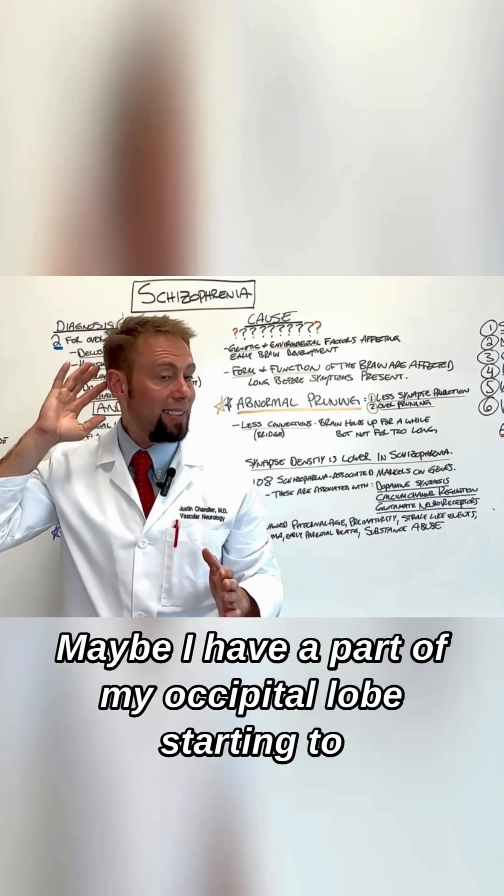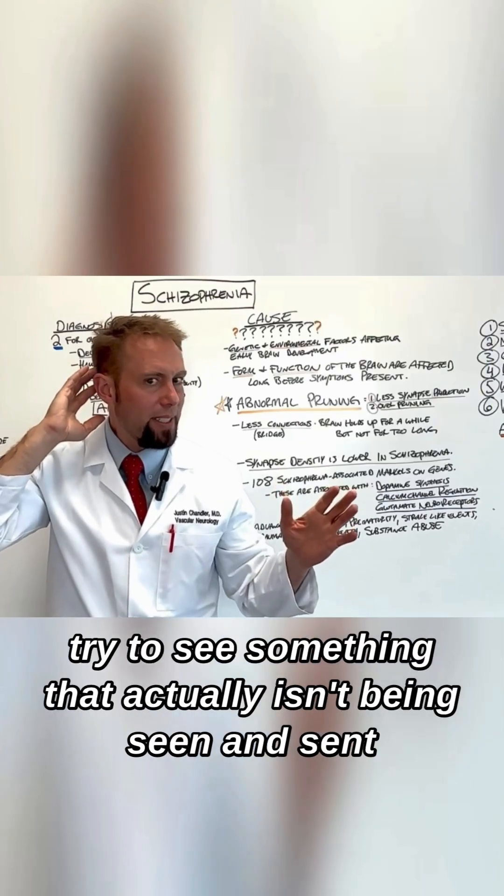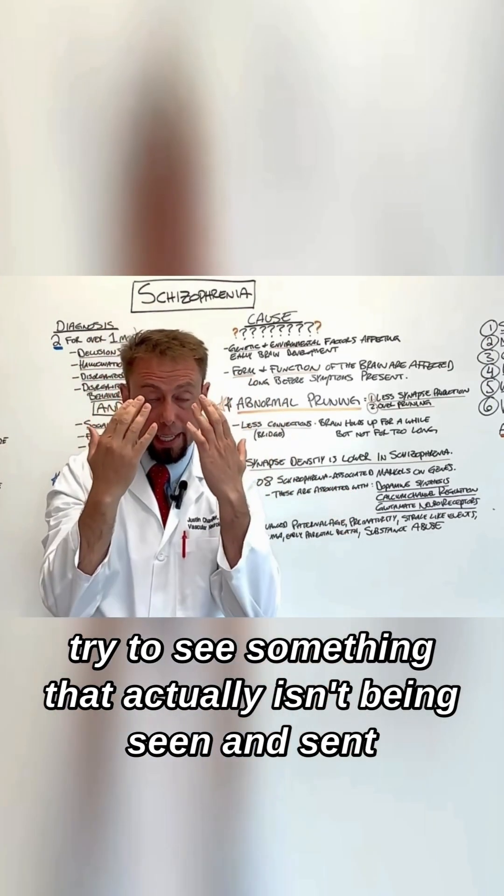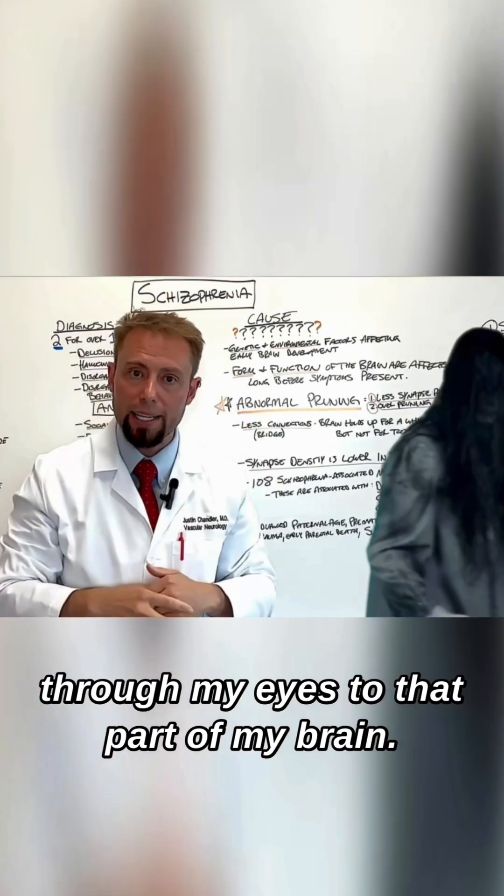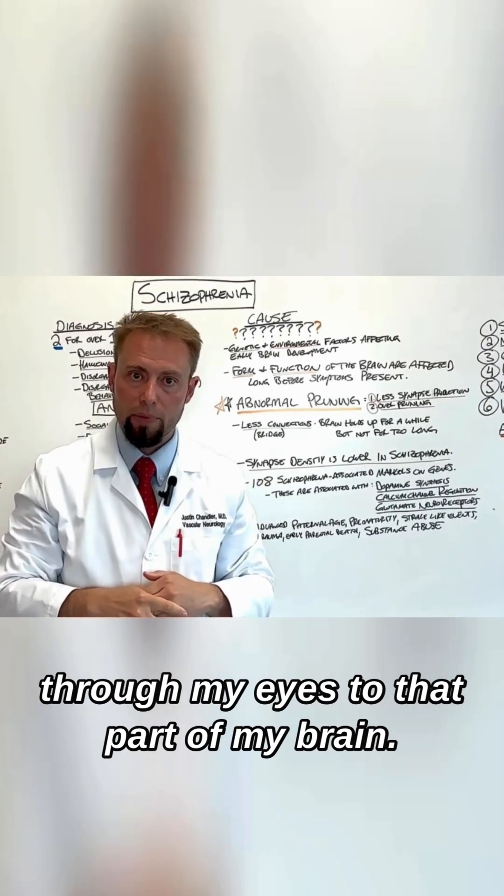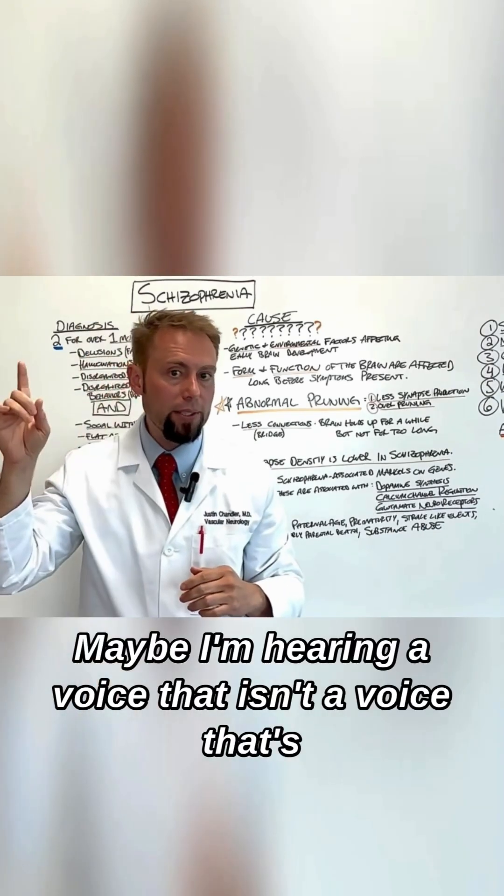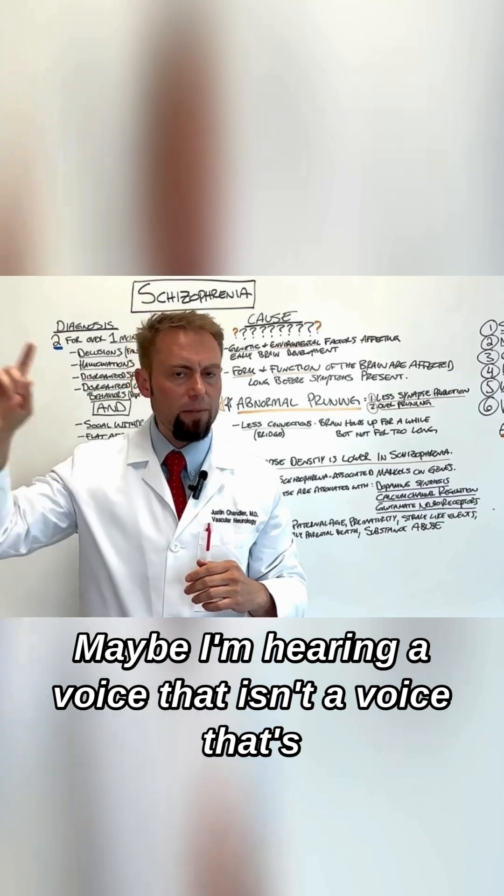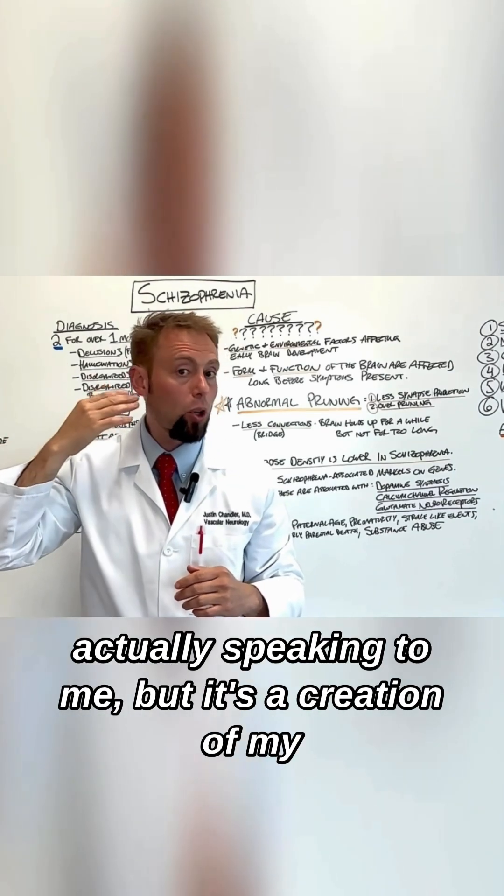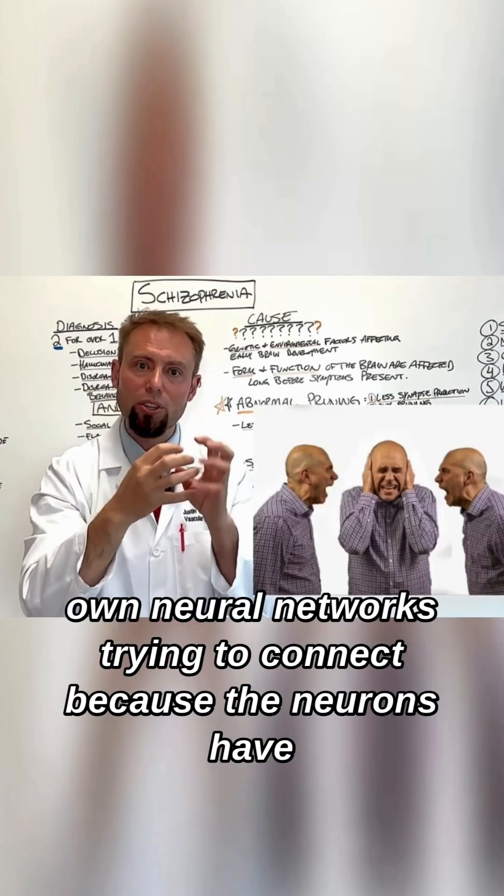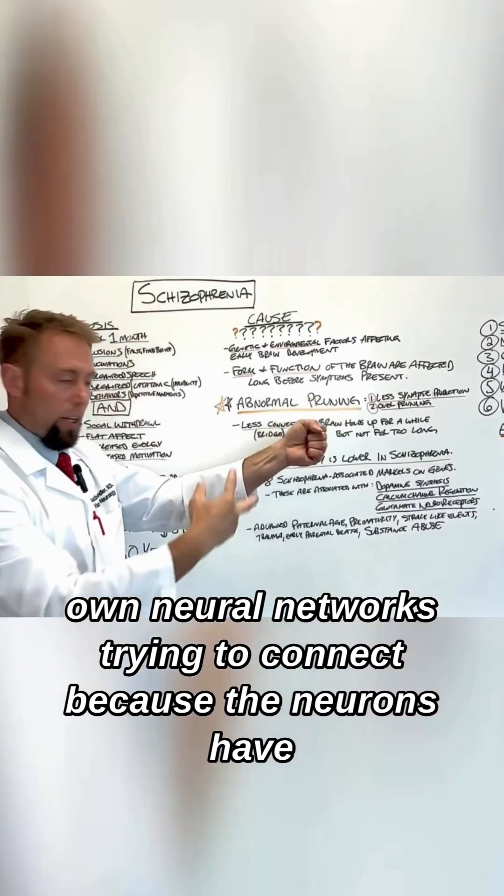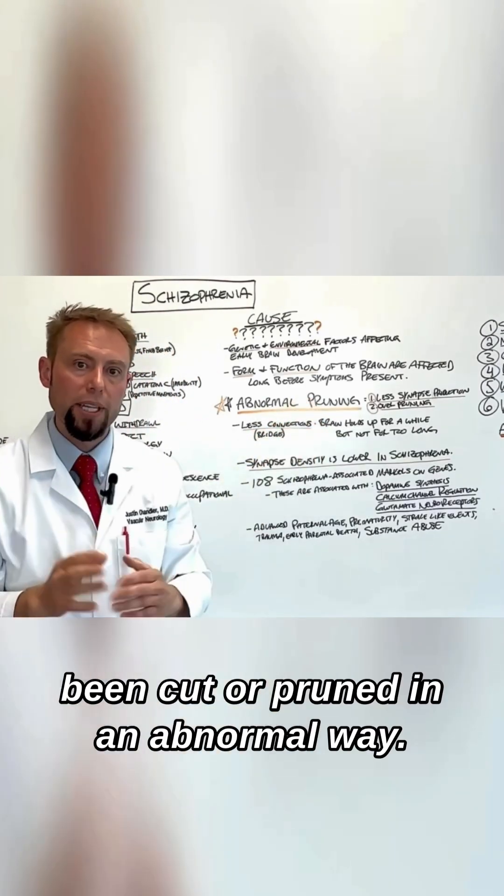Maybe I have a part of my occipital lobe starting to try to see something that actually isn't being seen and sent through my eyes to that part of my brain. Maybe I'm hearing a voice that isn't a voice that's actually speaking to me, but it's a creation of my own neural networks trying to connect because the neurons have been cut or pruned in an abnormal way.